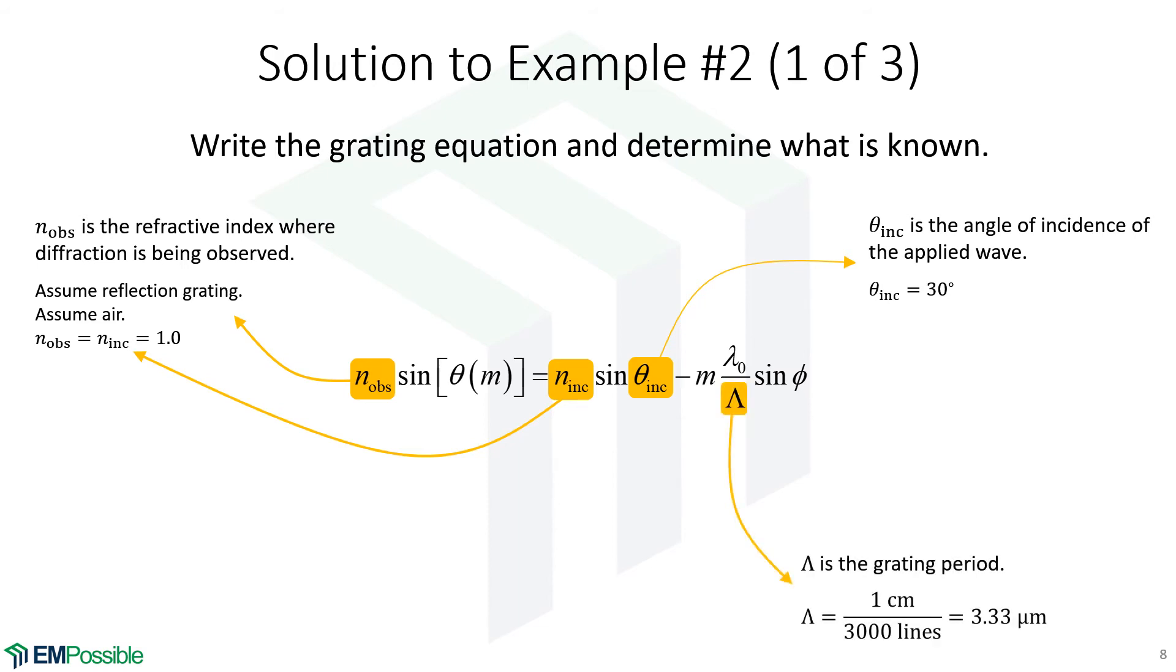The grating period. We were told 3,000 lines over a distance of one centimeter. So one centimeter divided by 3,000 gives a grating period of around 3.33 micrometers.